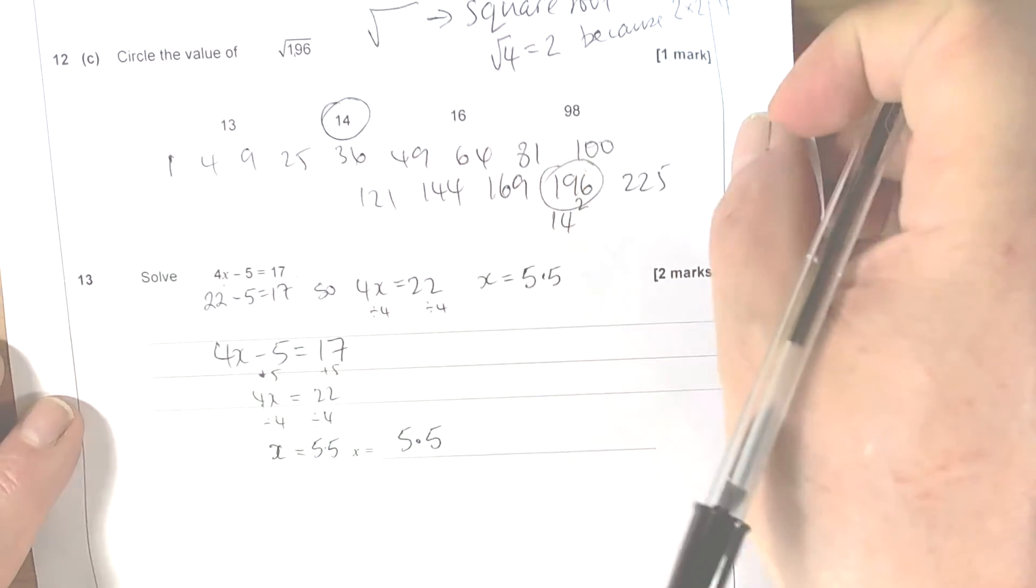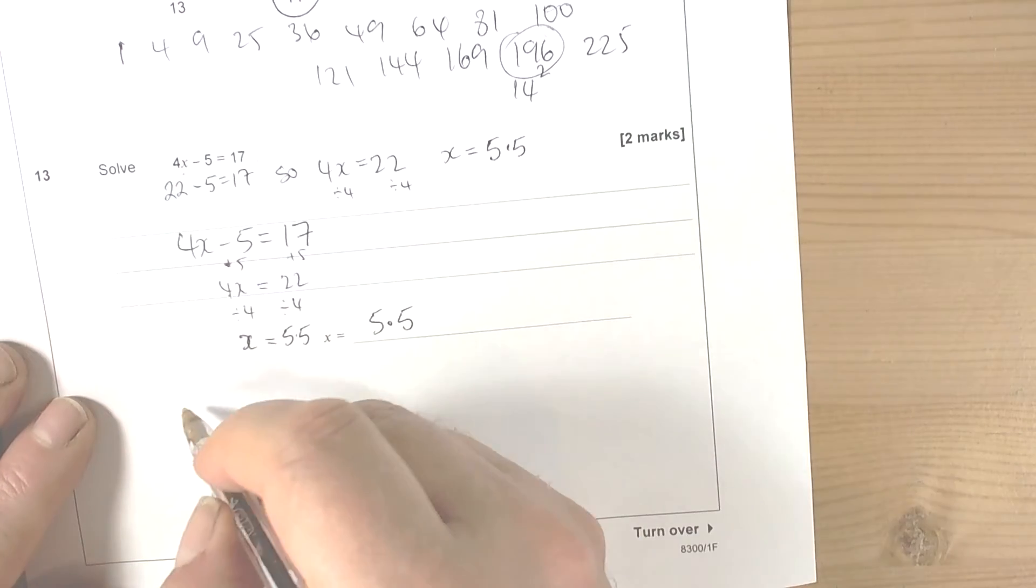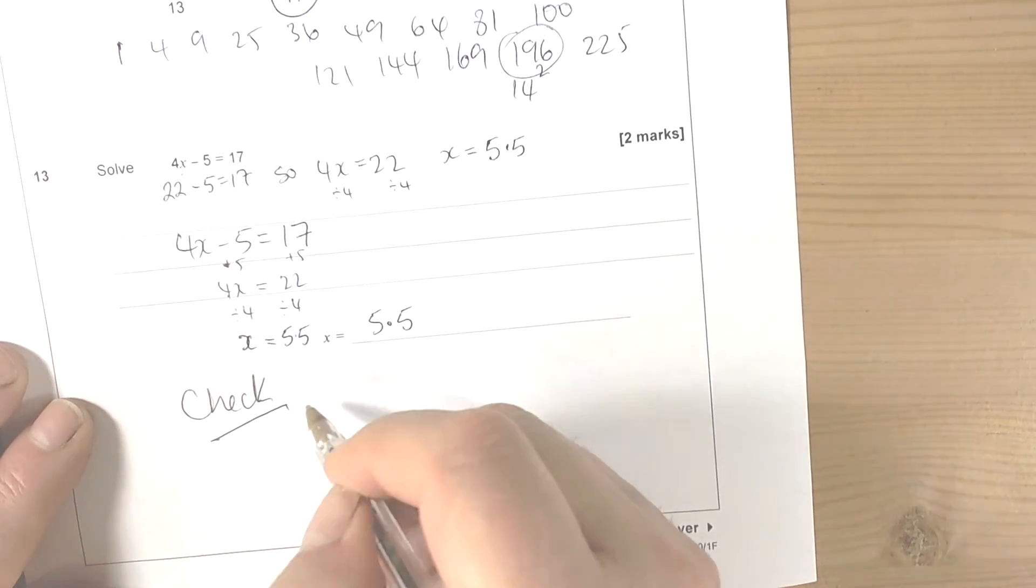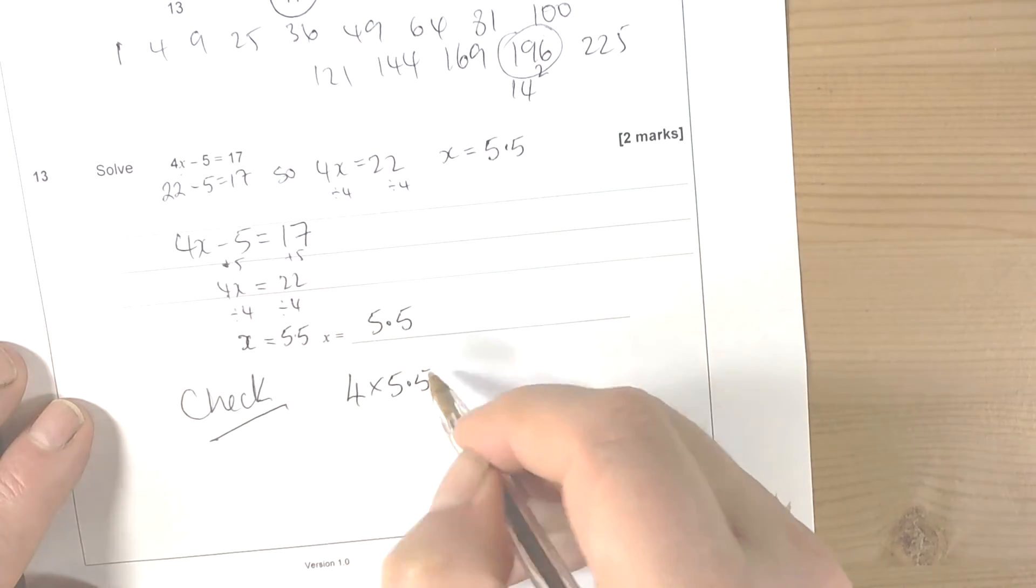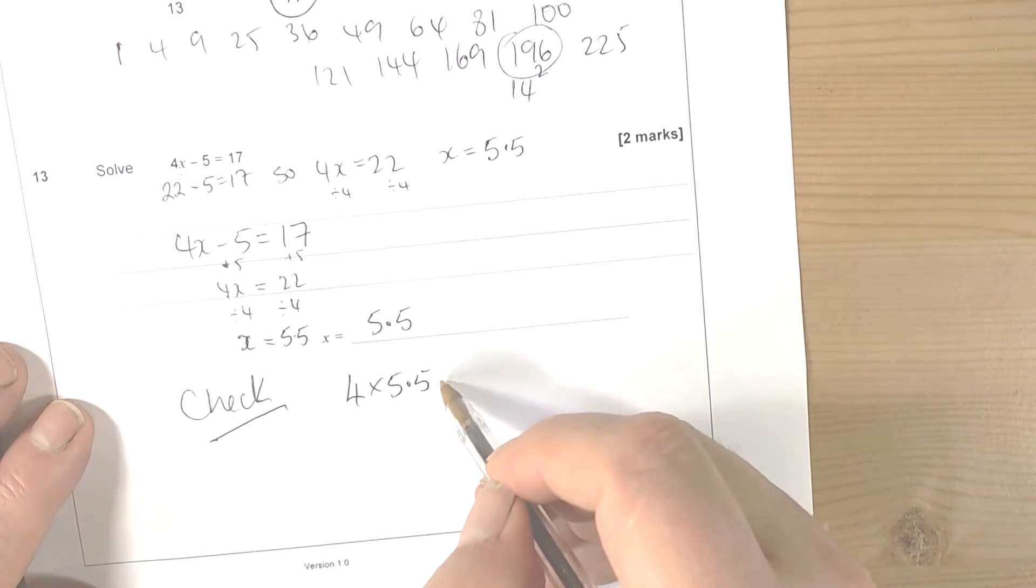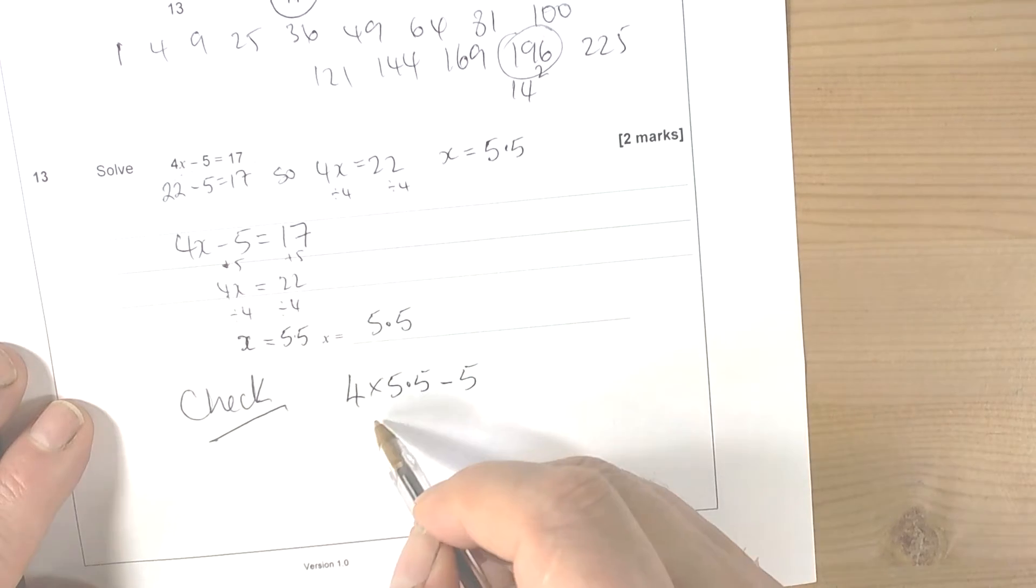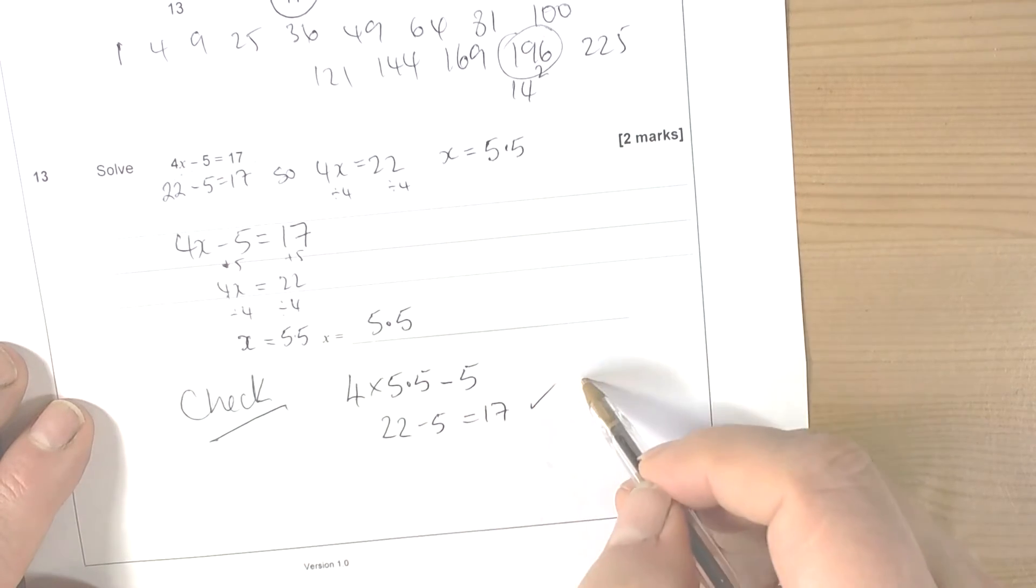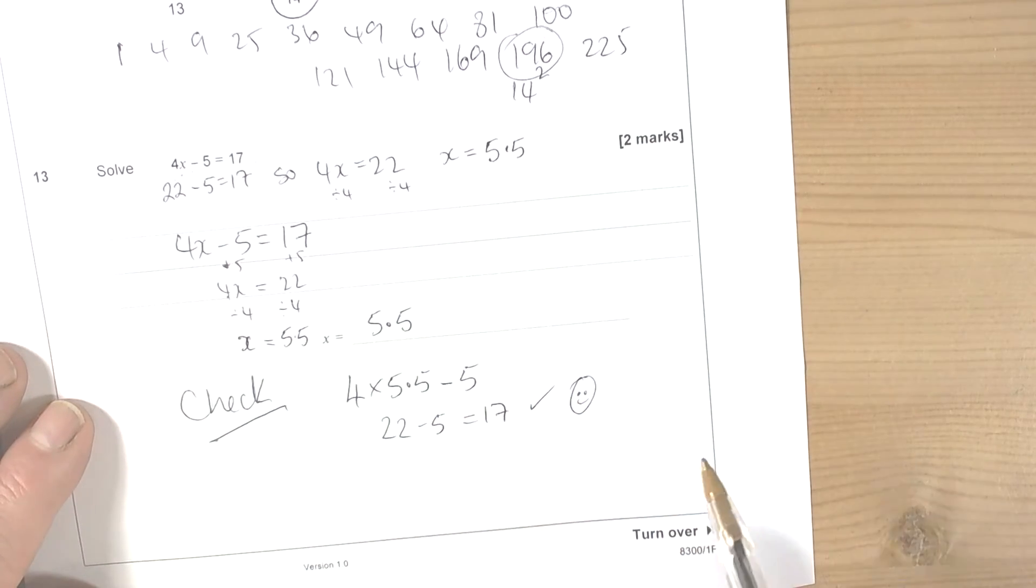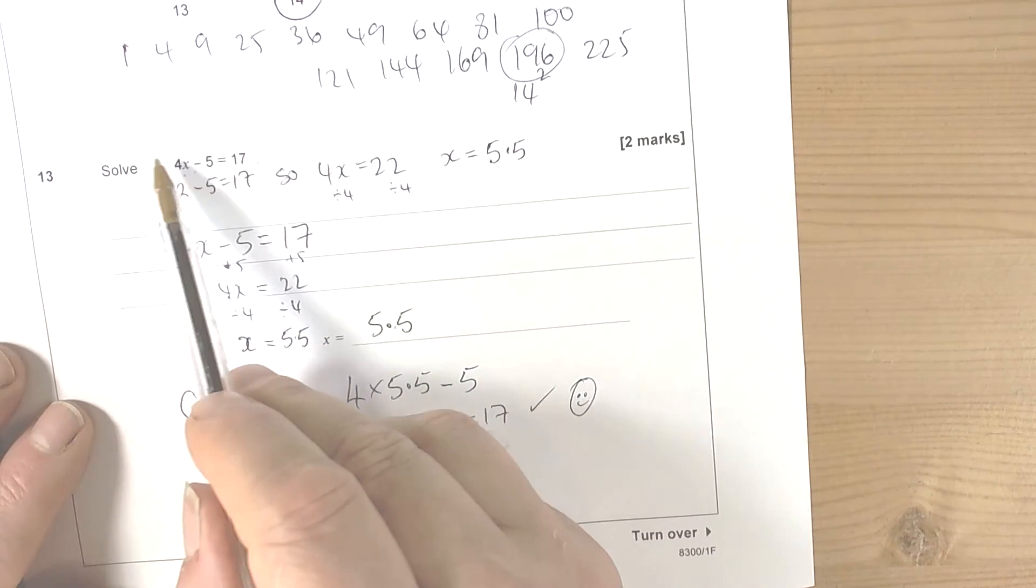But of course when you have any questions involving solving, then we should check if it works. So 4 times 5 and a half, because if the value of x is true, then 4 times its value take away 5, well we need to work that out. So 4 times 5 and a half is 22, 22 take away 5 is 17. So the check worked. The value of x that we found does make this equation true.